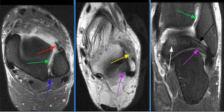There is contusion of the anterolateral and posteromedial margins of the talar dome, likely sequela of an inversion injury with a rotary component.